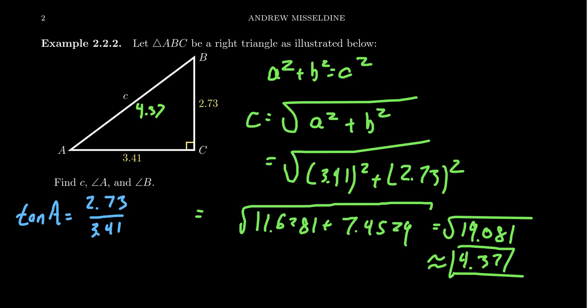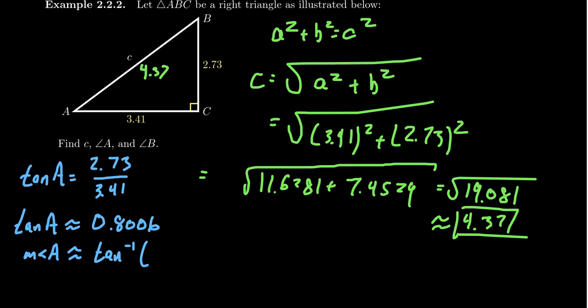Consulting the calculator, tangent of A ≈ 0.8006 — keep as many decimal places as possible. To get the measure of angle A, we apply the arc tangent (inverse tangent) function: arctan(0.8006). The inverse function notation uses a negative-one superscript, which does not mean an exponent — it means the inverse function. We'll discuss this in more depth in future lectures.